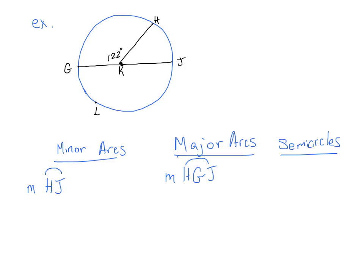So, semicircle, we treat in the same way. And we have a semicircle right here. And we have one right here. So we need three letters to name a semicircle. So I'm going to pick the bottom one for now and work with the measure of GLJ, arc GLJ. Alright.